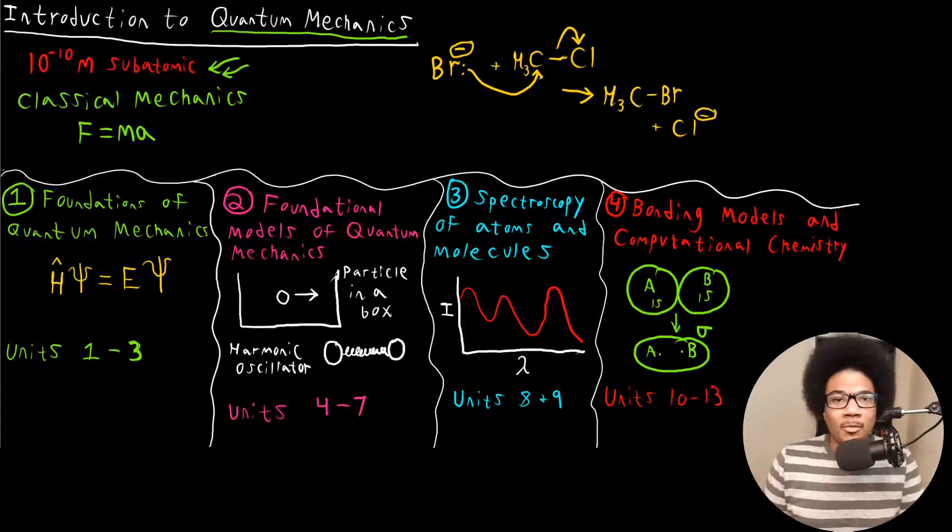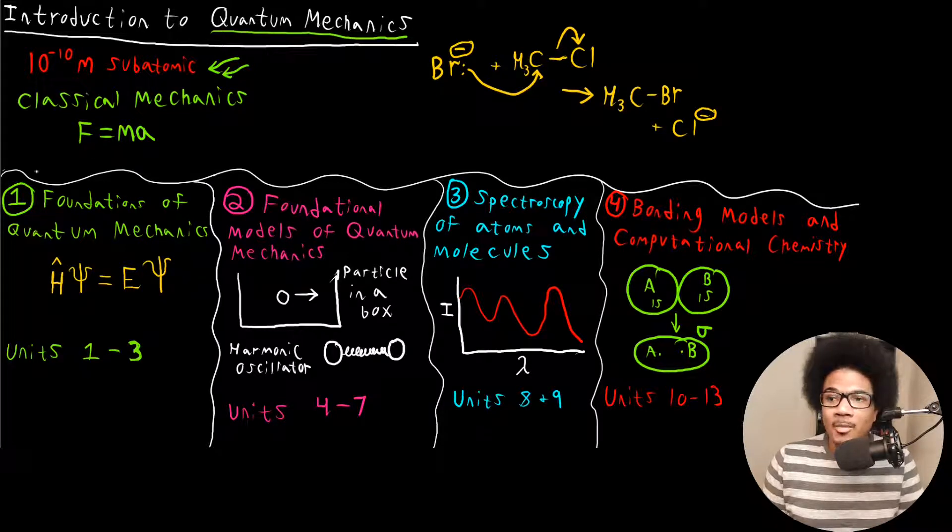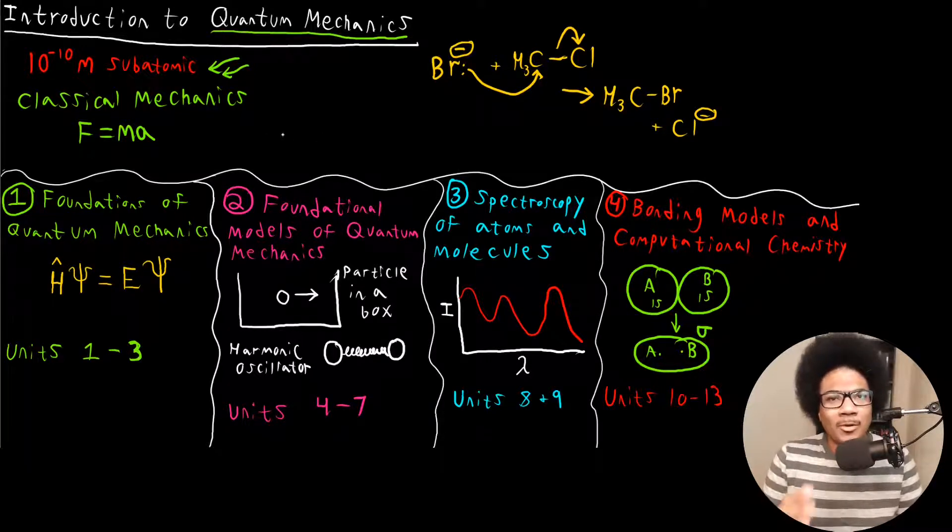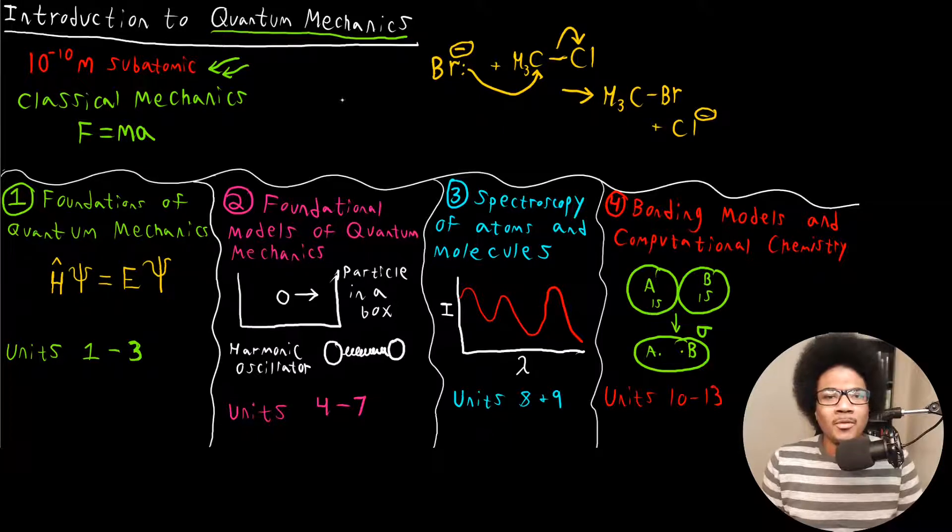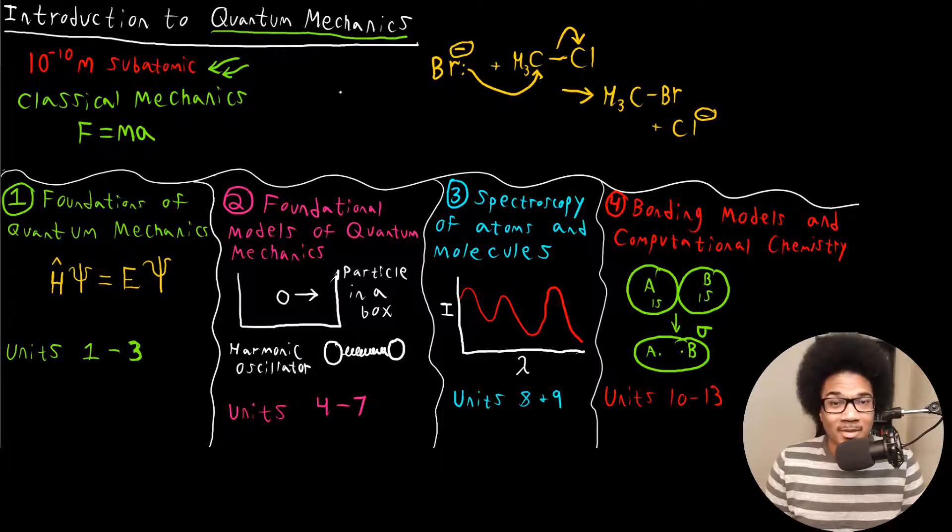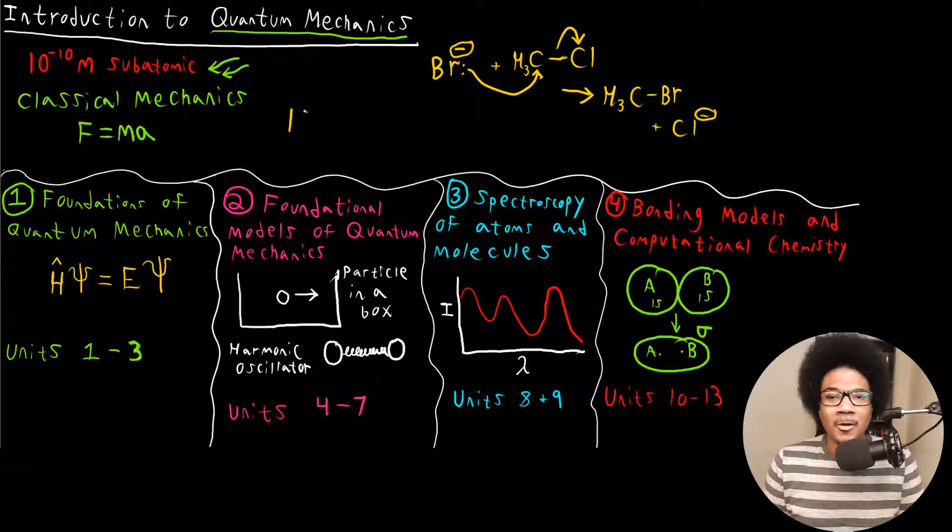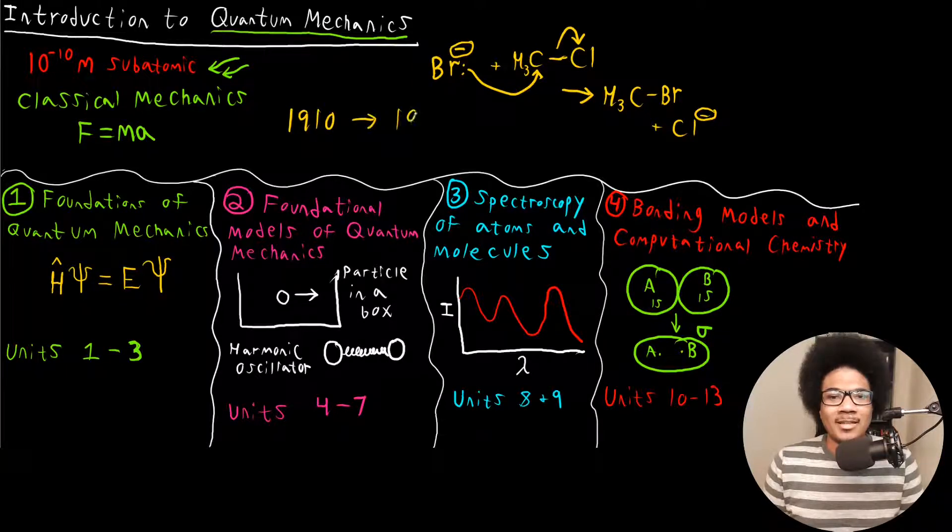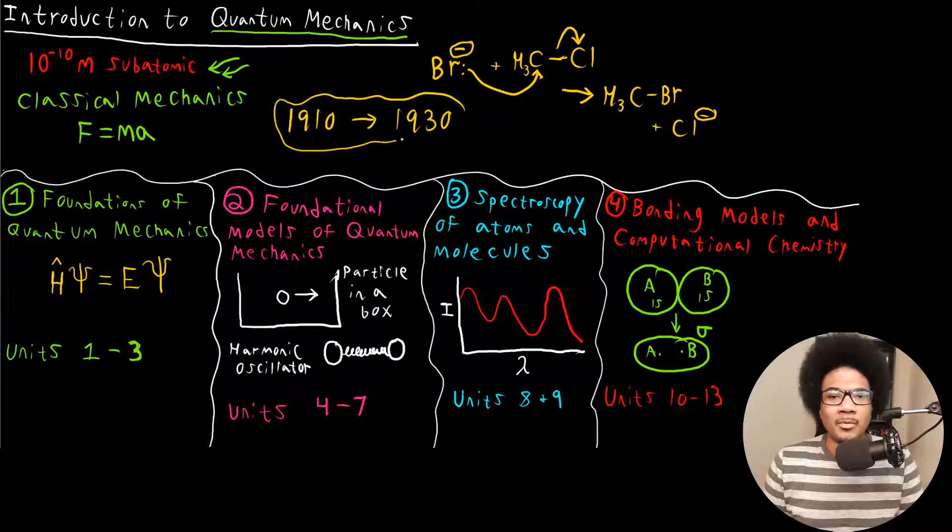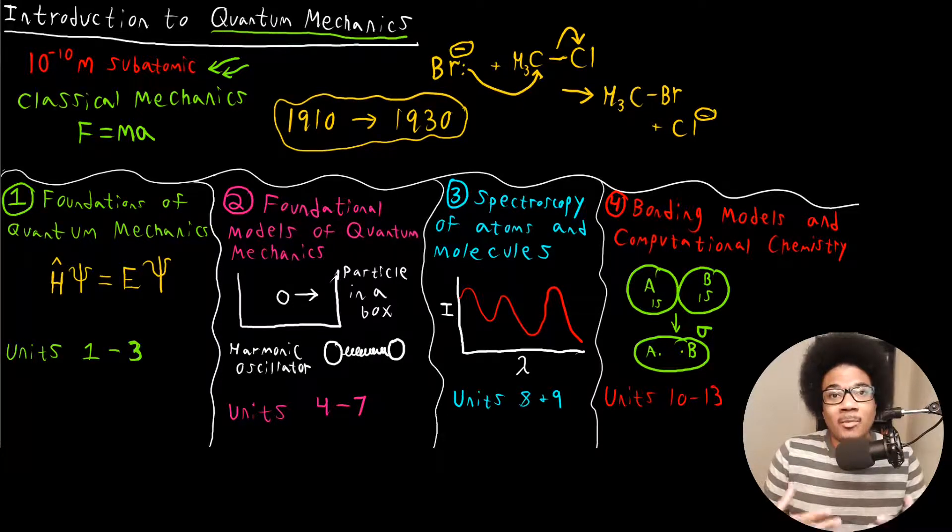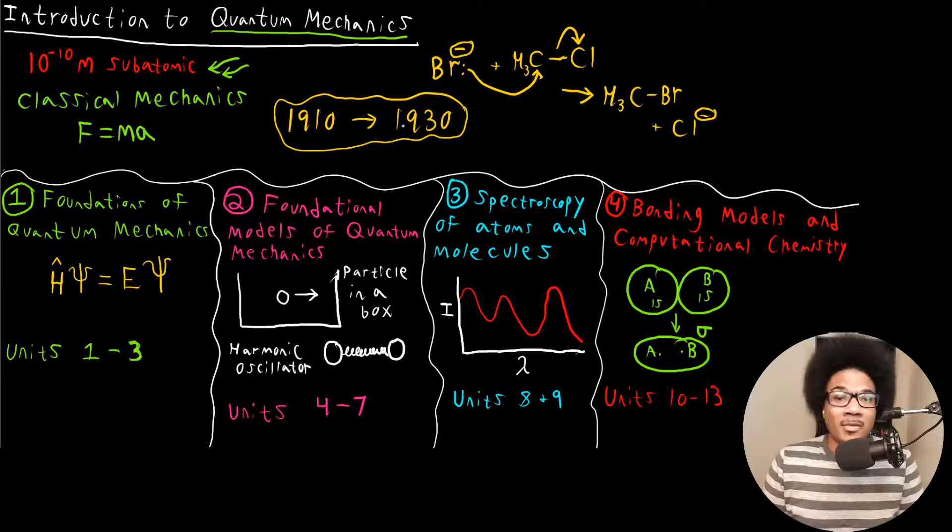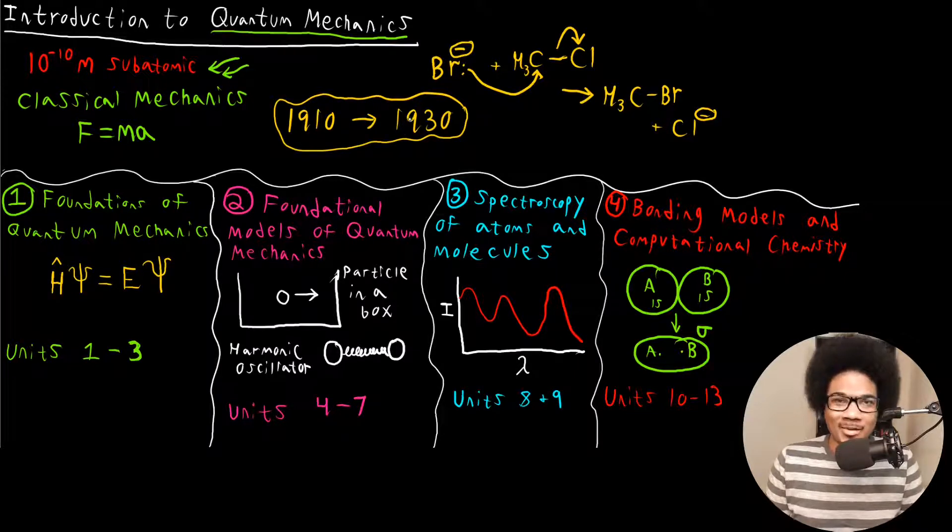Another thing that I really wanted to drive home about quantum mechanics is how relatively new it is. Most of the developments, the key developments in the theory of quantum mechanics mostly occurred between like 1910 to about 1930. This was really the hot period when quantum mechanics was first really being theorized and coming into the age as a mature field. Now, you might be thinking, well yeah, at this point, that's 100 years ago. That's still a long time from now.